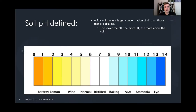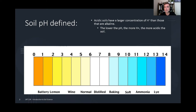In soil, we don't usually say 'acidic or basic' — that's more for liquid measurement in chemistry. In the soil, we tend to say 'acidic or alkaline.' Alkaline means the same thing as basic — it just means you're higher than pH 7. Acidic soils have a larger concentration of hydrogen ions (H+) than those that are alkaline.